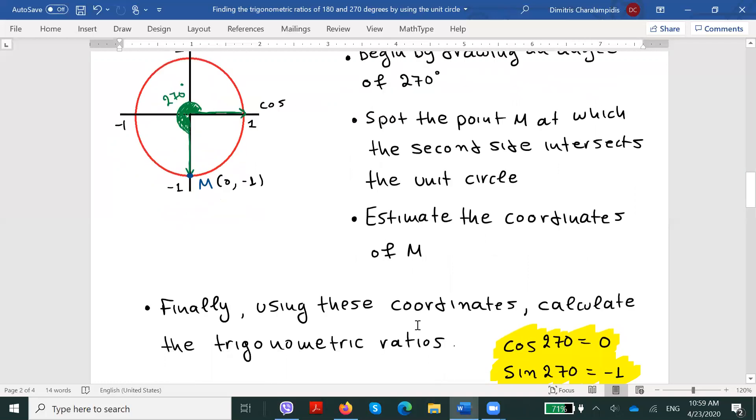More precisely, again, the x coordinate of that point will be the cosine of the angle, so cos(270°) = 0, while on the other hand, the y coordinate of this point will be the sine of the drawn angle, and therefore, sin(270°) = -1.